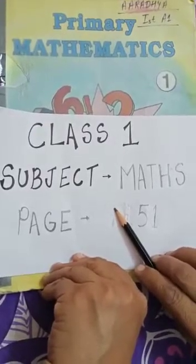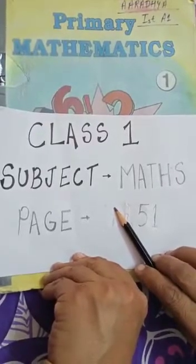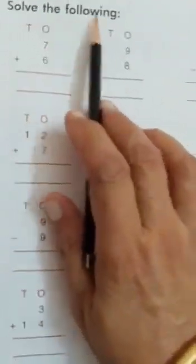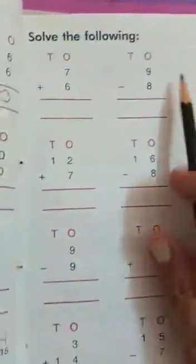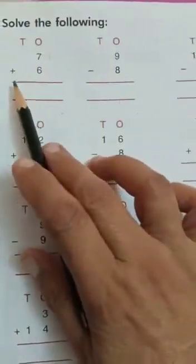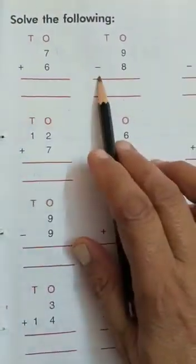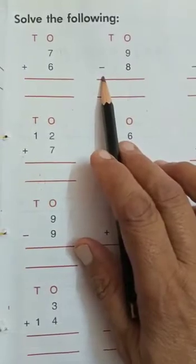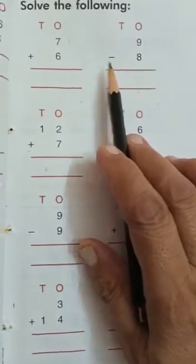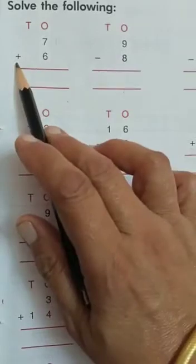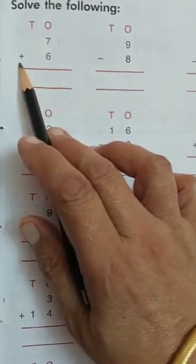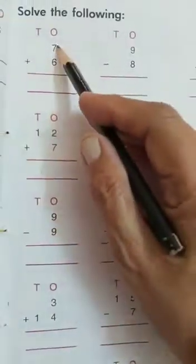Good morning students, take out your math book page 51. Solve the following. You have to add or subtract these questions. First of all we will check the sign — this is a sign of addition, it means we have to add these numbers.